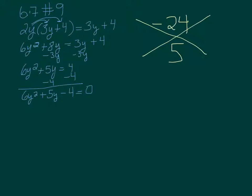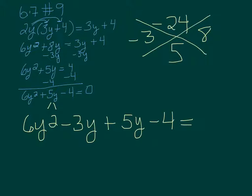So one has to be positive, one has to be negative. If we think about it, 6 and 4 aren't going to add up to 5. 12 and 2 won't work. But what about 8 and 3? If I do negative 3 and positive 8, that'll add up to 5. So I want to split that middle term and I'm going to have 6y squared minus 3y plus 5y minus 4 equals 0.